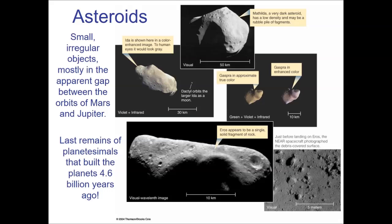Welcome to the video lecture on the combined chapters 12, 13, and 14. I'm taking all three chapters and grouping them together. In the last video lecture, we looked at all the planets in the solar system, and now we're interested in the leftover stuff. If you're not the sun, any of the planets, or any of the moons of the planets, you fall into this other category, which we generally refer to as space debris.